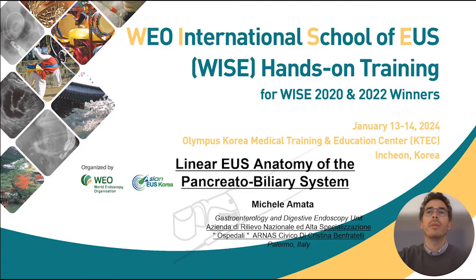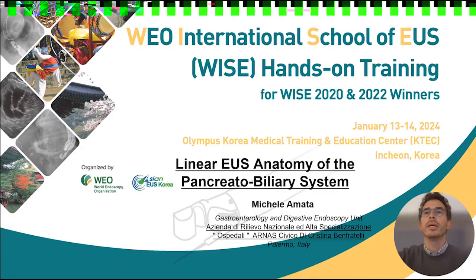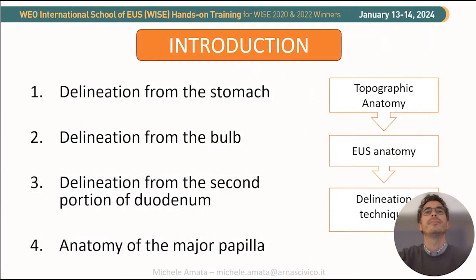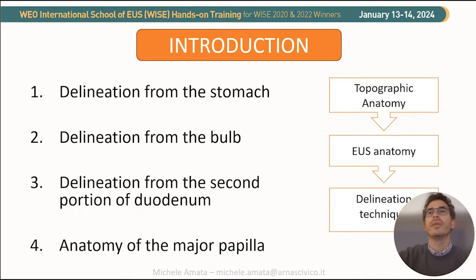Today we will speak about linear EUS reverse anatomy of the pancreatobiliary system. I will start to describe the pancreatobiliary anatomy from the stomach, then from the bulb, and from the second portion of the duodenum, with a special focus on the US anatomy of the major papilla.